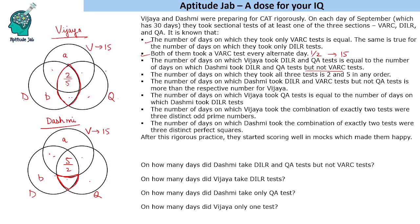The number of days on which Vijaya took the QA test equals the number of days on which Dashmi took the DILR test. Also, the number of days on which Vijaya took exactly two tests were three distinct odd prime numbers, and the number of days on which Dashmi took exactly two tests were three distinct perfect squares.